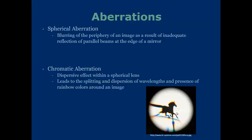Chromatic aberrations, on the other hand, have a dispersive effect within a spherical lens. This leads to the splitting and dispersion of wavelengths, and a presence of rainbow colors around an image. Any time you've looked at something that's been soaking wet in really bright sunlight, you'll notice that there is a halo or some sort of corona of rainbow color around it. That's chromatic aberration at work. As a lens maker, these are two aberrations that must be accounted for when making glasses or other magnification equipment.